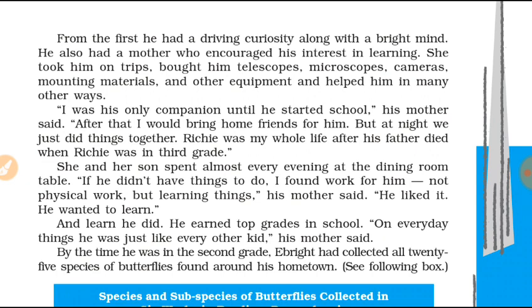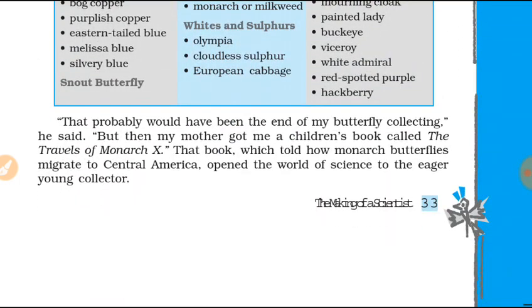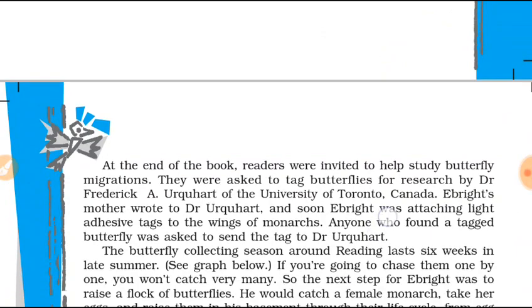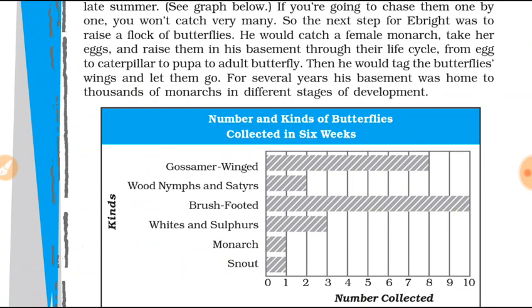Richard's mother was his companion, as he had no brothers or sisters. She was constantly with him, encouraged him by taking him on trips, and bought him a telescope and other equipment. She found work to challenge him and help him learn a lot, contributing greatly to the development of his scientific temper.